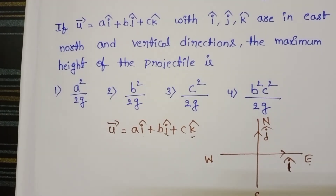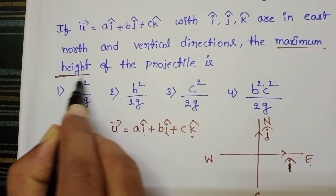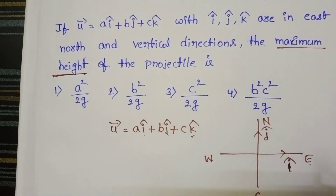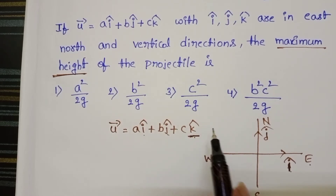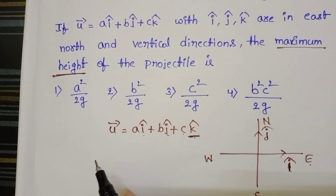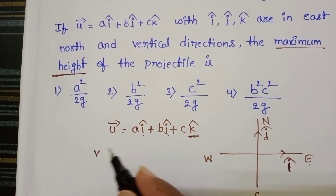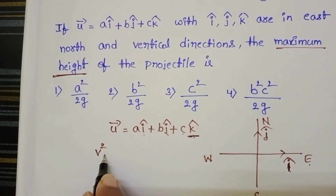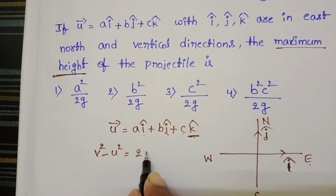We want to find out the maximum height of the projectile. In the vertical direction, k cap unit vector is acting. The component of velocity along the vertical direction is c. To find out the maximum height, take the equation v square minus u square equals 2as.